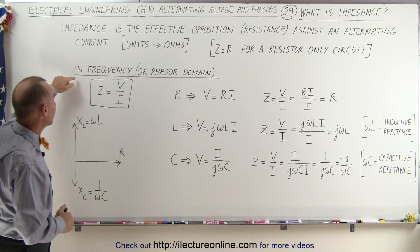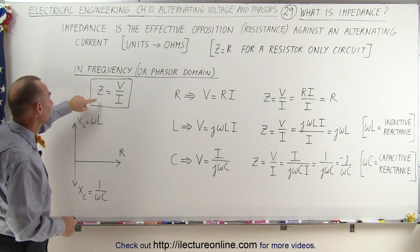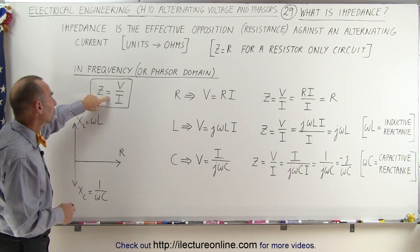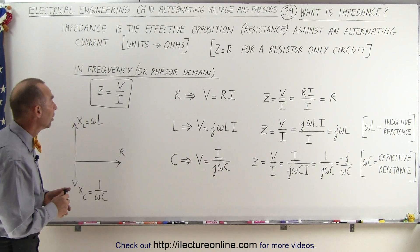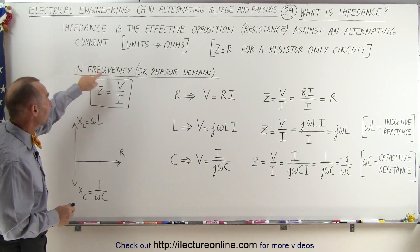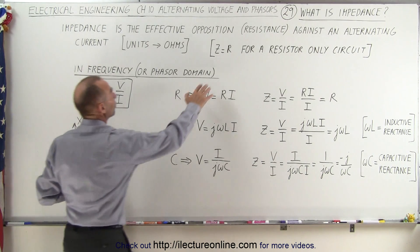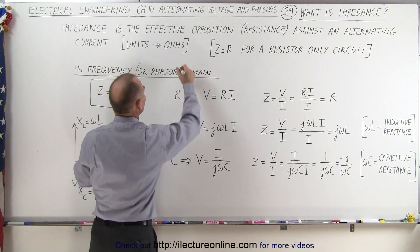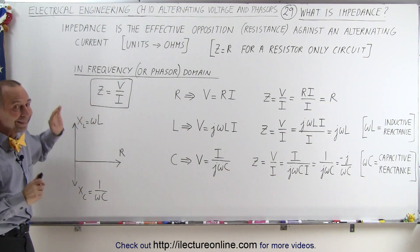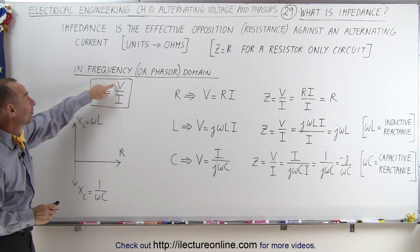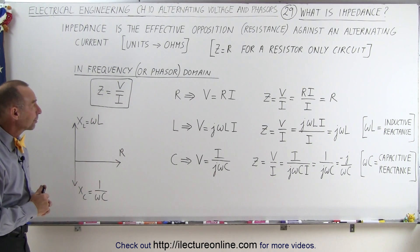So in the frequency domain or the phasor domain, we can think of impedance Z as simply equal to the ratio of the voltage divided by the current. That looks exactly like Ohm's law, but notice that now we're in the phasor domain — we use the phasor voltage and the phasor current instead of the time-domain voltage and current.